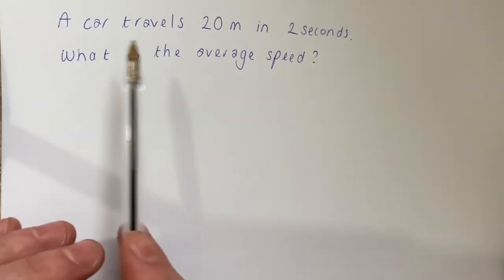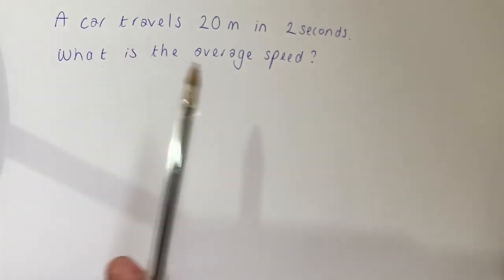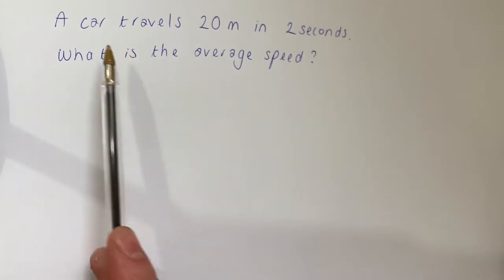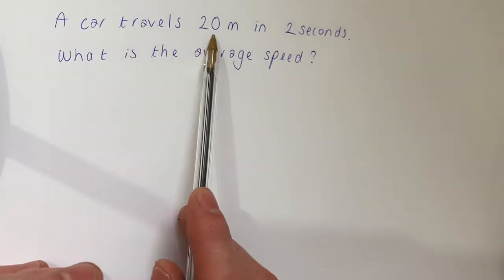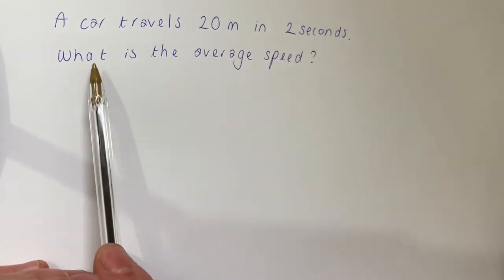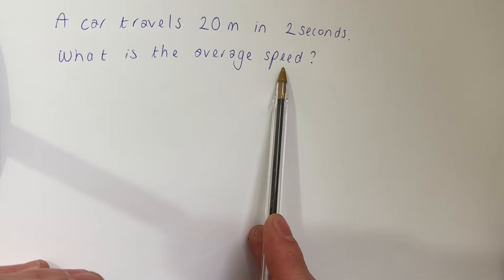The first thing we want you to do is take a look at the question and pick out the numbers that are mentioned in the question. So it says a car travels 20 metres in 2 seconds. What is the average speed of the car?